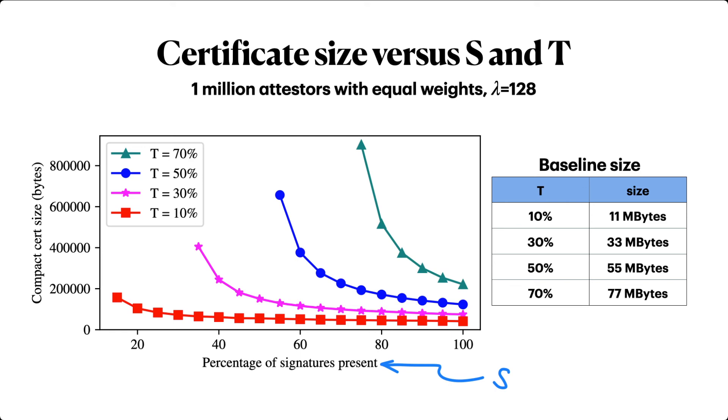In contrast, naive certificates range from 11 to 77 megabytes depending on the target weight. In other words, about 50 to 280 times larger than a compact certificate.